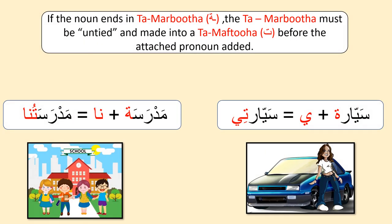If the noun ends in tamar buta, the tamar buta must be untied and changed into a ta maftuha before the attached pronoun is added. See the example: sayyara. While adding dhamairul muttasila 'ya,' the tamar buta changes to ta maftuha — sayyarati. Same thing happens with madrasa: when we add 'na,' tamar buta changes to ta maftuha. Adding 'ya' at the end of the noun means 'my.' Sayyarati means 'my car.' Madrasa-tuna means 'our school.'